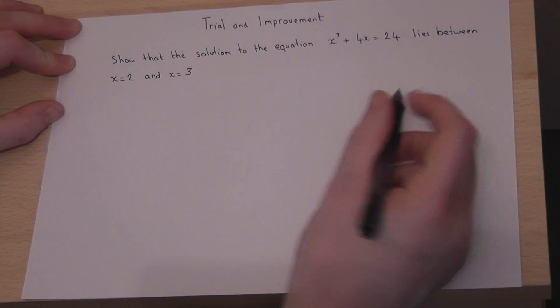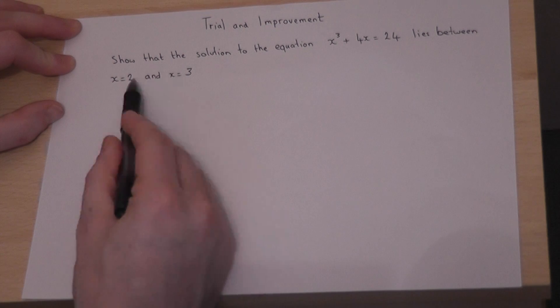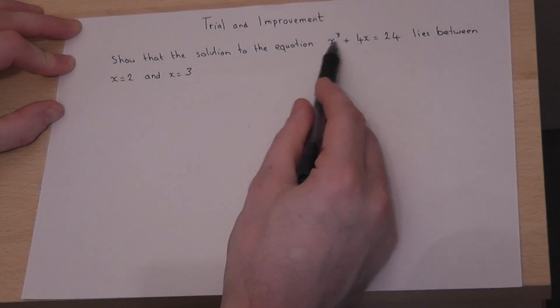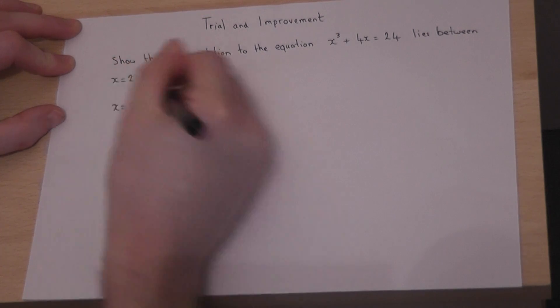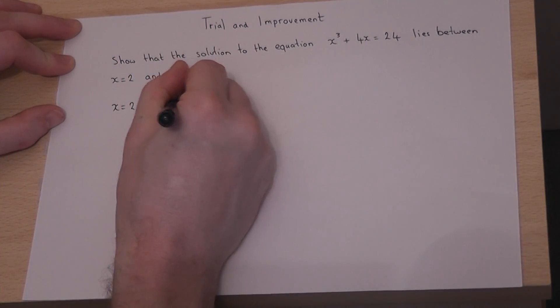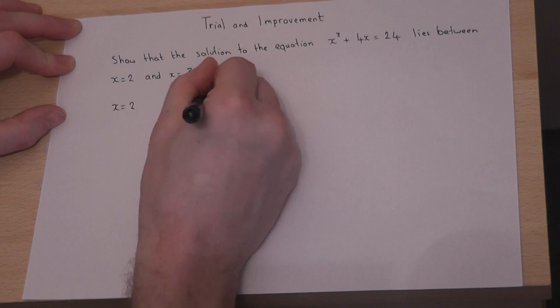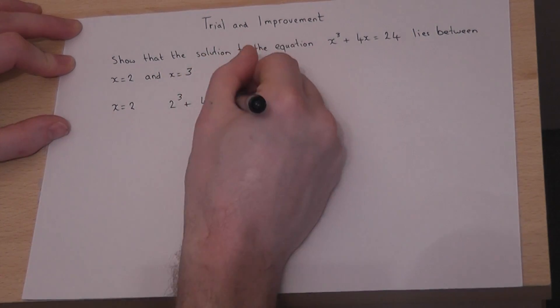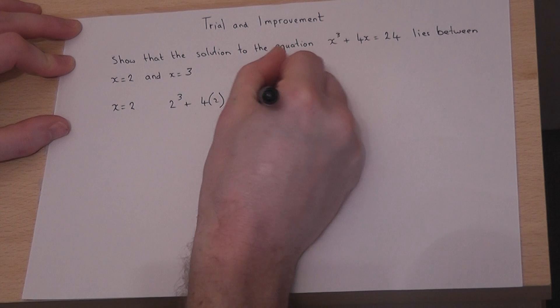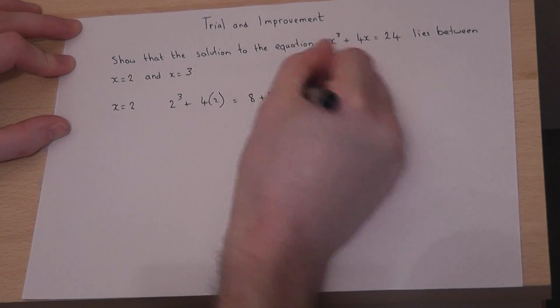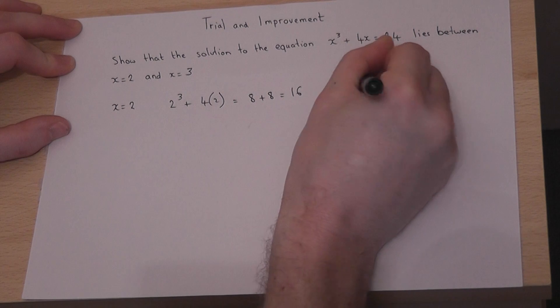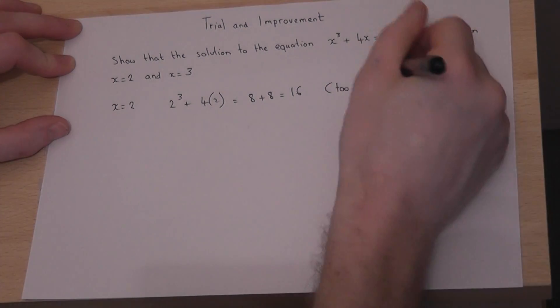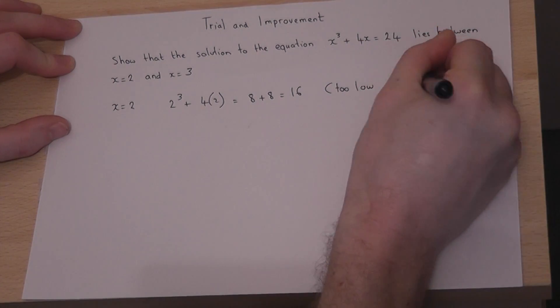Now, the method here is to put the two values separately into the left-hand side of the equation. When x equals 2, 2 cubed plus 4 lots of 2 equals 8 plus 8, which equals 16. This is too low compared to 24; that is, 16 is less than 24.